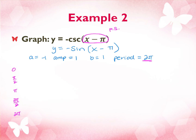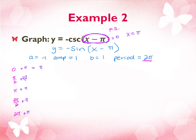Adding π to each point gives me: π, then pi over two plus pi needs a common denominator — two pi over two, so three pi over two. Then pi plus pi is two pi, and two pi over two is also fine. Next: three pi over two plus pi — that's five pi over two. And last: two pi plus pi equals three pi. Also, because of the negative A, there's no vertical shift but we do flip it upside down.